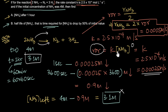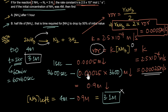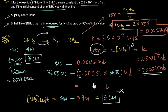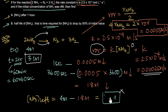So in one second, 0.0005 molar of ammonia is actually being converted. In one hour: 0.0005 × 3600 = 1.8 molar reacted. Therefore the concentration of ammonia left after one hour is 4 − 1.8 = 2.2 molar. The correct answer for part (a) is 2.2 molar.